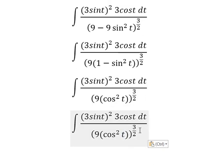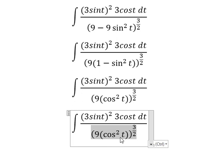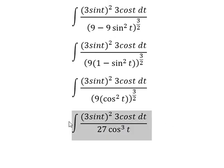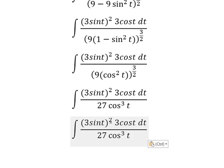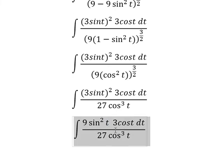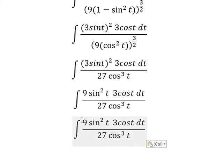So with 9 raised to the power of three over two, we get 27. And cos²(t) raised to the power of three over two gives cos³(t). This one we have 9·sin²(t) on the numerator, and now we need to simplify 27·cos(t) on numerator and denominator.